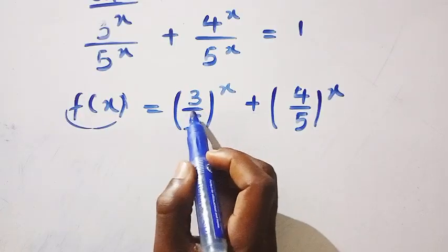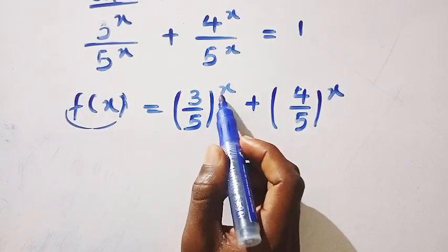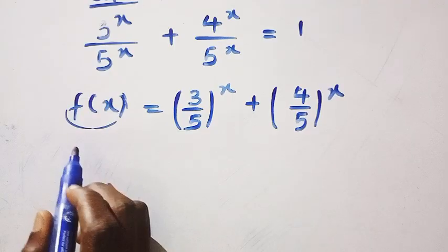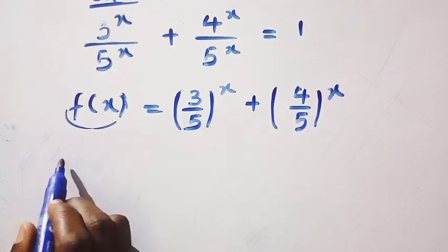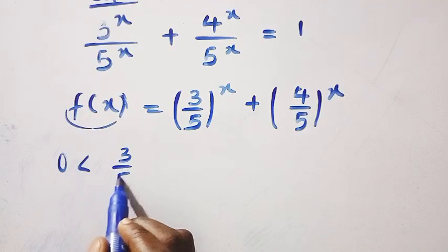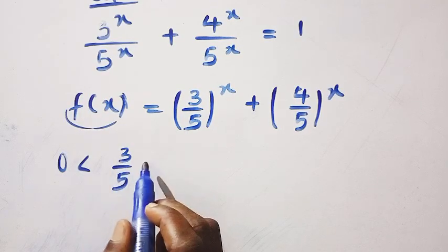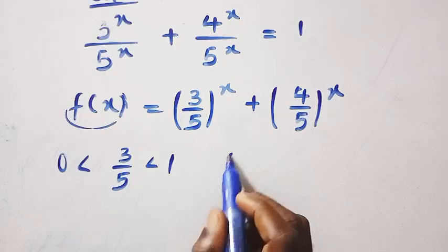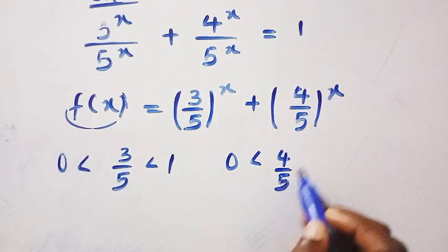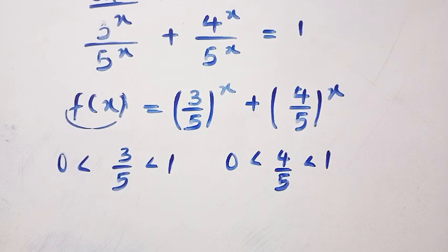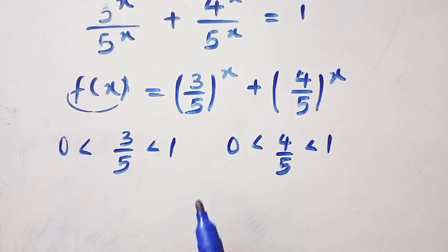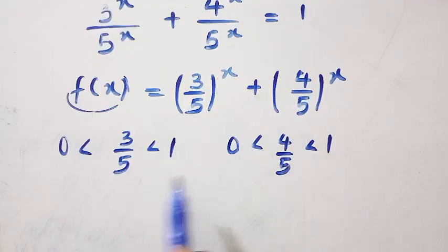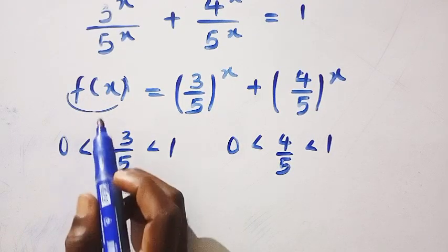Considering the values involved: we have 0 < 3/5 < 1 and 0 < 4/5 < 1. Since both bases 3/5 and 4/5 lie strictly between 0 and 1, both (3/5)^x and (4/5)^x are decreasing functions. This shows that f(x) is strictly decreasing.